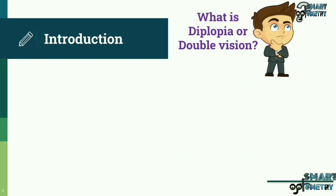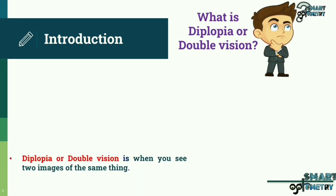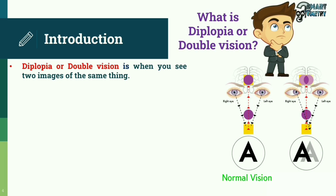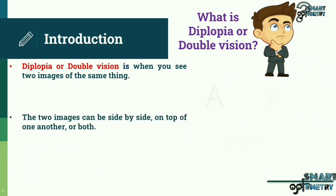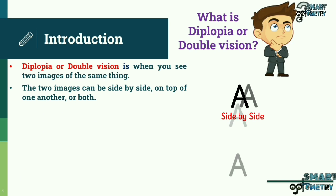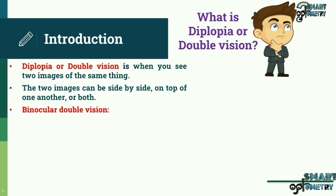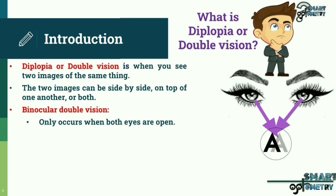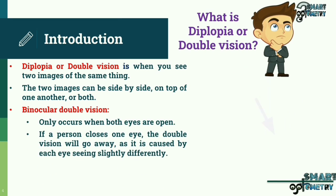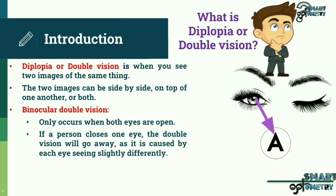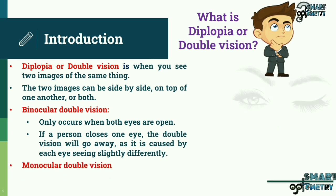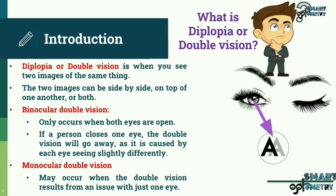Let us first understand what is diplopia or double vision. Diplopia or double vision is when you see two images of the same thing. The two images can be side by side, on top of one another, or both. Binocular double vision only occurs when both eyes are open; if a person closes one eye, the double vision will go away as it is caused by each eye seeing slightly differently. Monocular double vision may occur when the double vision results from an issue with just one eye.